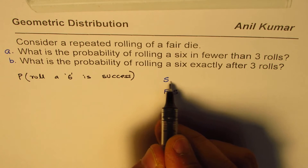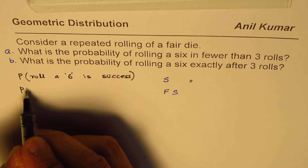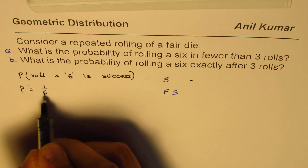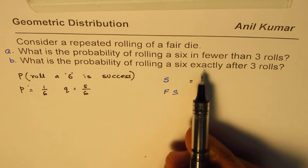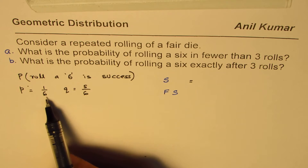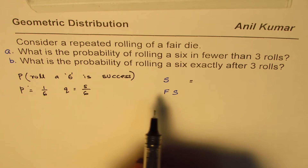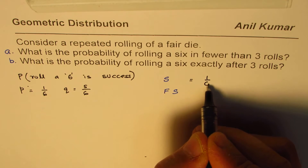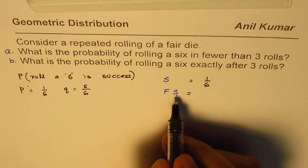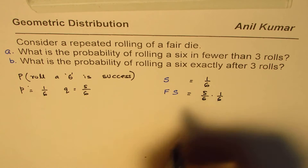If you get success in the first roll, then the probability of rolling six in this case is one out of six. Probability for failure is five out of six. A die has six faces, so rolling a six is one out of six as a success and failure is five out of six. These are all independent events. So in the first roll, if you get success, the probability is one out of six. And if you get success in the second roll with failure in the first, then it is five out of six times one over six.